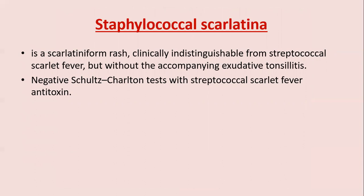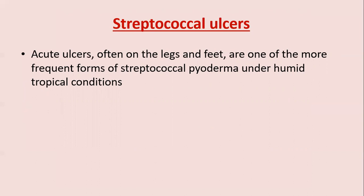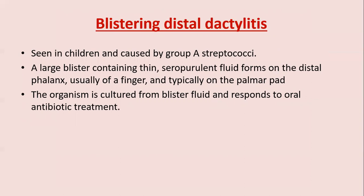Streptococcal vulvovaginitis: Streptococcus pyogenes accounts for 10% of cases of vulvovaginitis; the child complains of genital soreness or irritation; skin is acutely erythematous; there may be purulent discharge or dysuria. Neisseria gonorrhoeae cannot be distinguished clinically; infection responds to oral penicillin or erythromycin. Streptococcal ulcer — acute ulcer on leg and feet — is the most frequent form of Streptococcus pyogenes under humid and tropical conditions. Blistering distal dactylitis, seen in children caused by group A strep, presents as a large blister containing thin seropurulent fluid at the distal phalanx, usually of a finger on palmar pads; organism is cultured from blister fluid and responds to oral antibiotics.